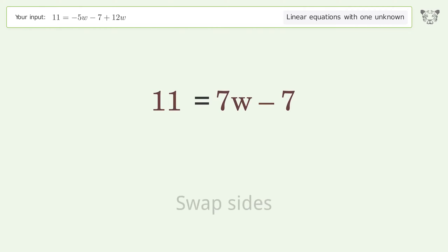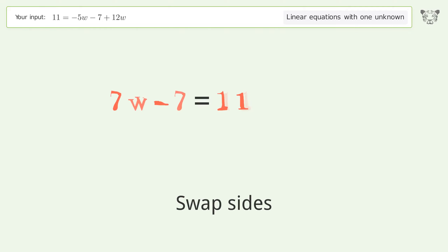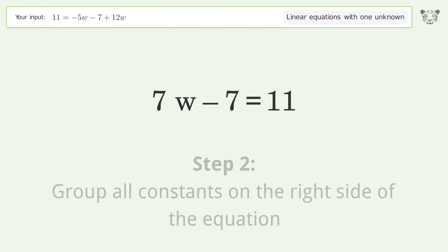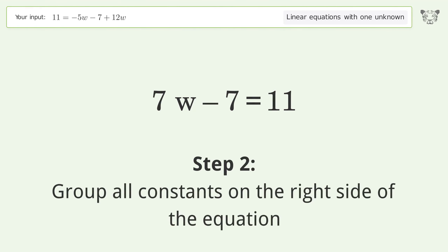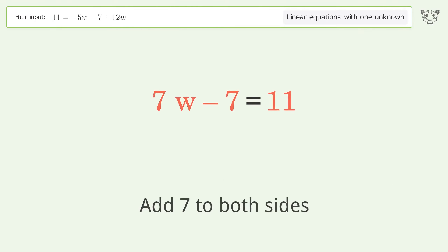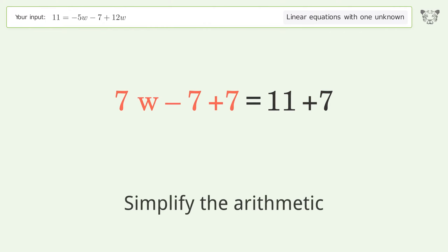Swap sides. Group all constants on the right side of the equation by adding 7 to both sides. Then simplify the arithmetic.